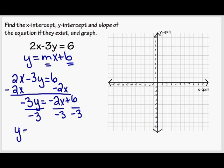So I'll get y equals, now negative over negative is a positive, so I'll have positive 2 thirds x. 6 divided by negative 3 is negative 2.